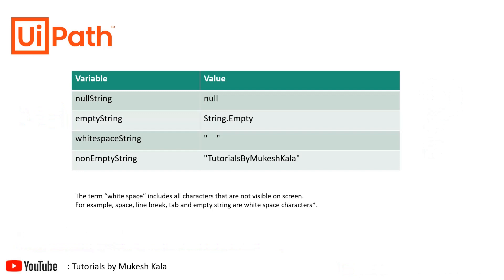On my screen I have four variables: null string, empty string, whitespace string, and a non-empty string. Whenever we are doing string manipulation, a value can be null, or a string can be initialized but empty (string.Empty), or it can have a whitespace value, or it can be a normal string — for example, my channel name 'Tutorials by Mukesh Khala.'